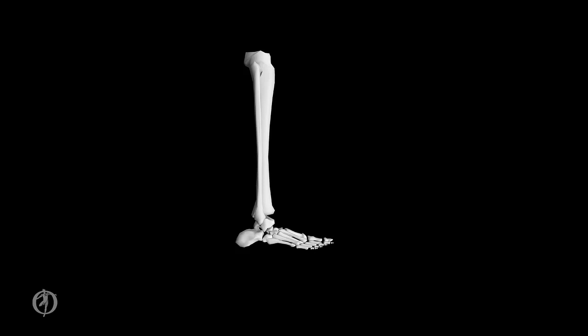Next, we have the talocrural joint, sometimes referred to as the ankle — though the ankle complex includes both the talocrural and subtalar joints. The talocrural joint connects the talus to the tibia and fibula. There is a single degree of freedom; the axis of rotation goes through the malleoli. Motions include plantarflexion, seen here in yellow, and dorsiflexion, seen here in blue. Movements occur in the sagittal plane, and the talocrural joint is classified as a hinge joint.